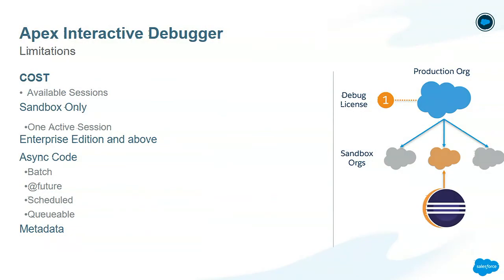Some other limitations of the interactive debugger: as mentioned, there's the number of active licenses. In the example shown, we have one license available in our org, meaning we can debug in one sandbox at a time. If we purchased additional licenses, we could have two active debug sessions, but those sessions would have to be in different sandbox orgs. The interactive debugger is only available in enterprise editions and above, although with unlimited and performance editions you do get one license out of the box. You're also not able to debug any asynchronous code such as batchables, futures, or schedulables, and any metadata changes you perform during debugging will terminate your session.